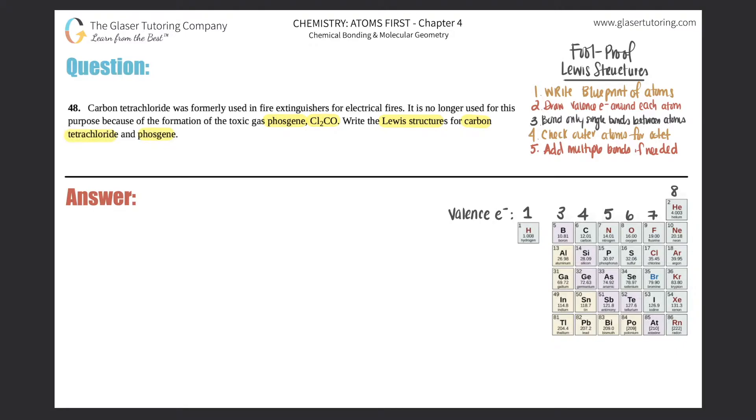Write the Lewis structures for carbon tetrachloride and phosgene. Okay, so they want us to write the Lewis structures for carbon tetrachloride and phosgene. Lewis structures are always coming from covalent molecules, which means that they're all nonmetals and we are sharing electrons. So that's the single, double, and triple bonds. So they gave us a formula for phosgene, which is Cl2CO, but they didn't give us a formula for carbon tetrachloride.